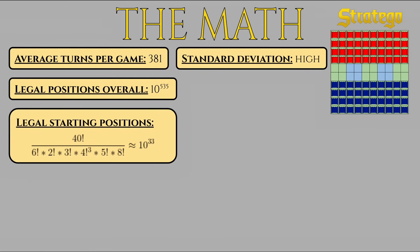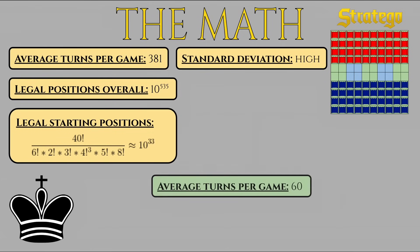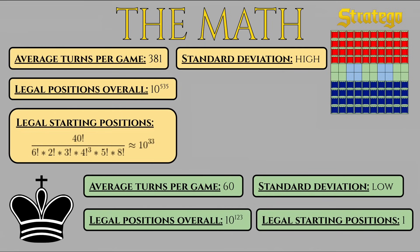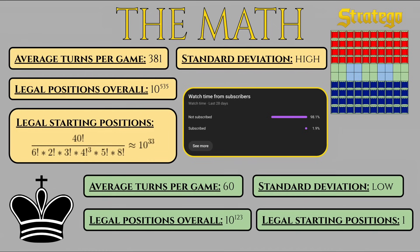To put this even more into perspective, chess, a world-renowned sport, game, or whatever you want to call it, averages 60 turns a game, and only has around 10 to the power of 123 possible game states. It turns out that the only thing larger than the number of Stratego positions is the number of people who watch my videos who aren't subscribed. Seriously though, it'd be kind of huge if that number went up by even just a small percentage. Feel free to if you enjoyed my content. Anyway, back to the video topic.